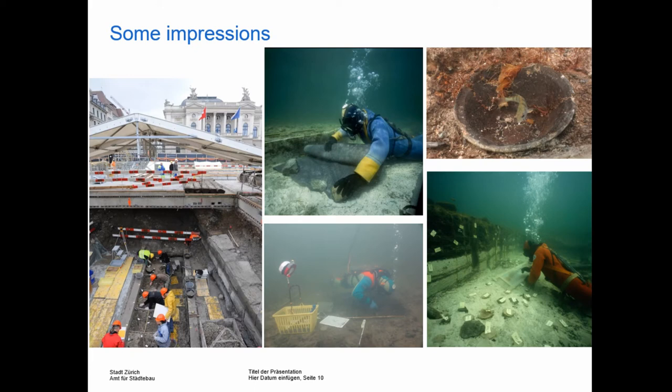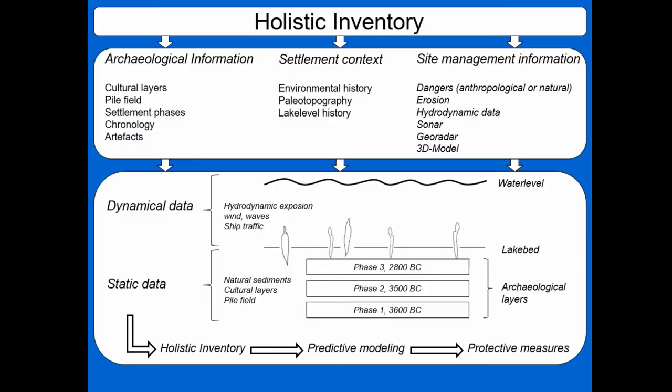To achieve a holistic inventory of all sites, we have used different methods for site analysis and modeling. A holistic inventory should include all archaeological information, the settlement context, and the site management information. This can all be split into two groups: the dynamical data, most of which has to be modeled, and the static data — the material that is still there in the ground that we are trying to study.